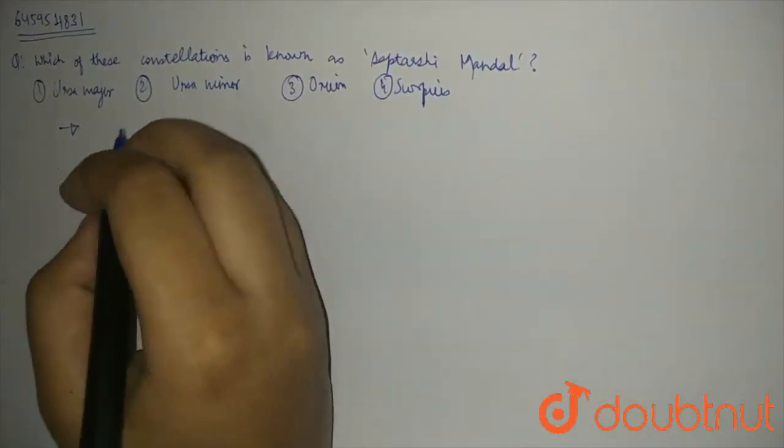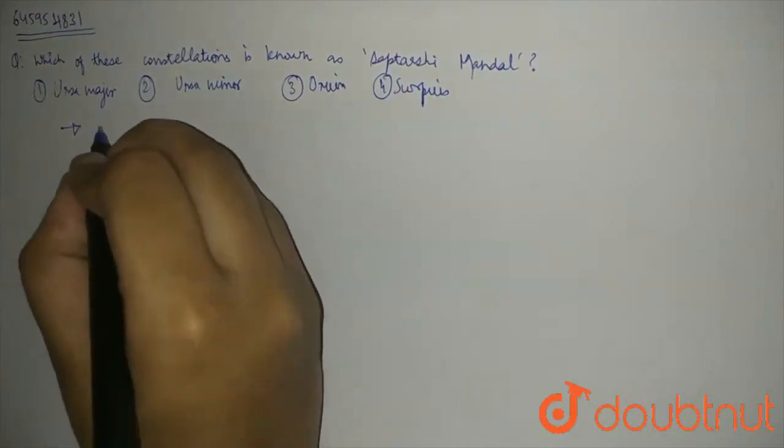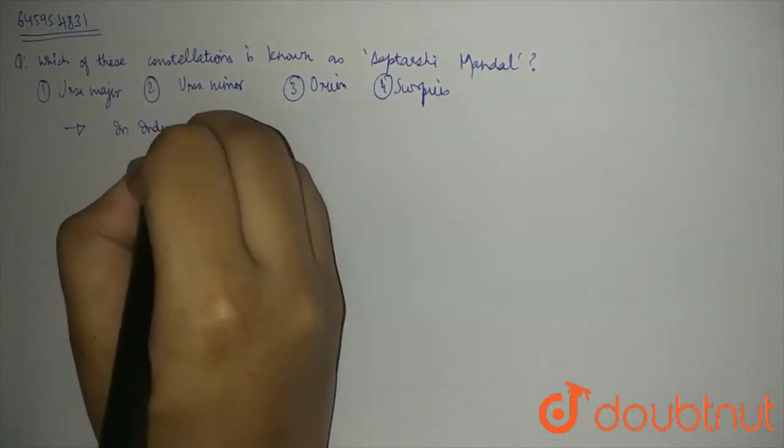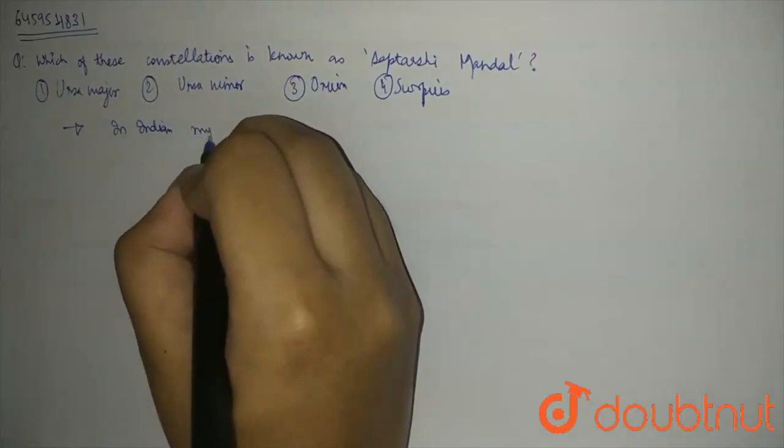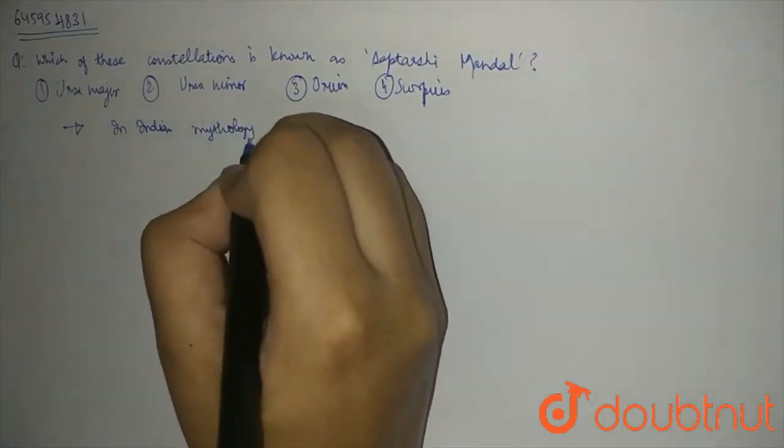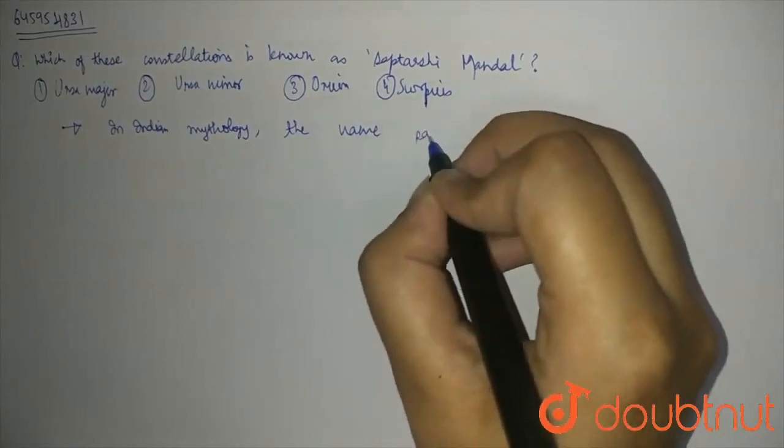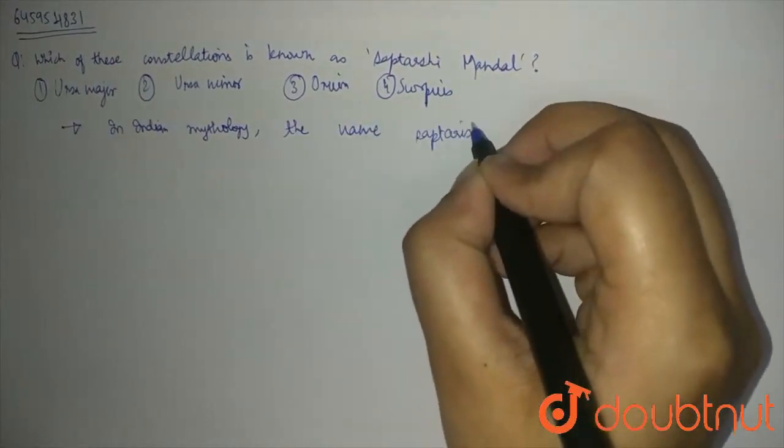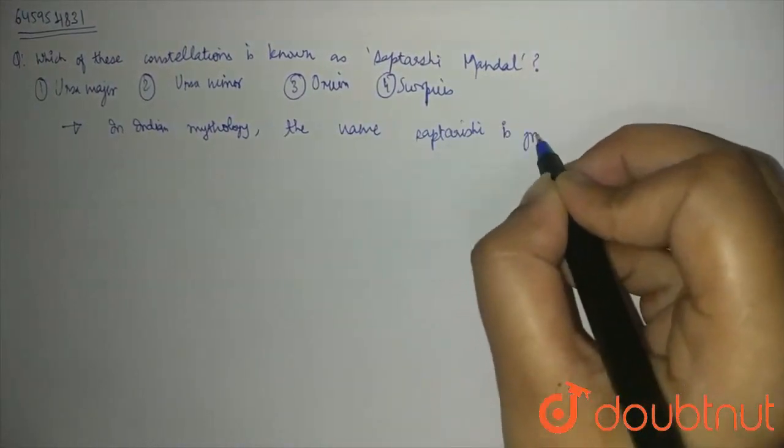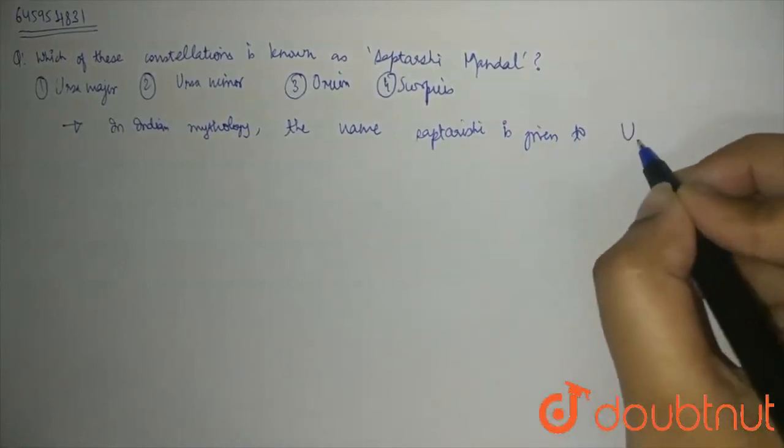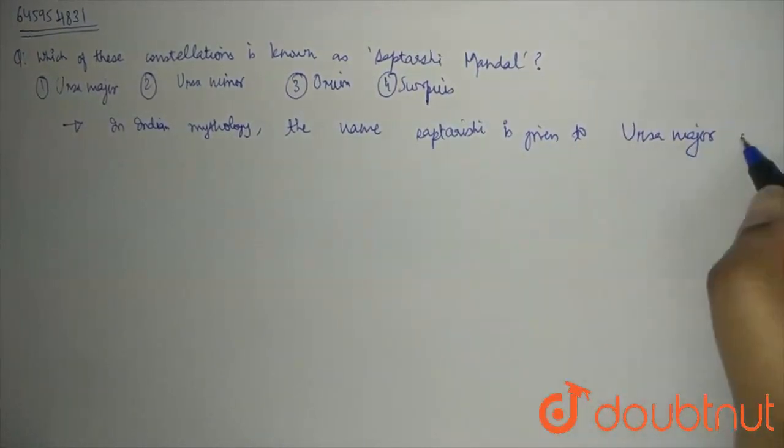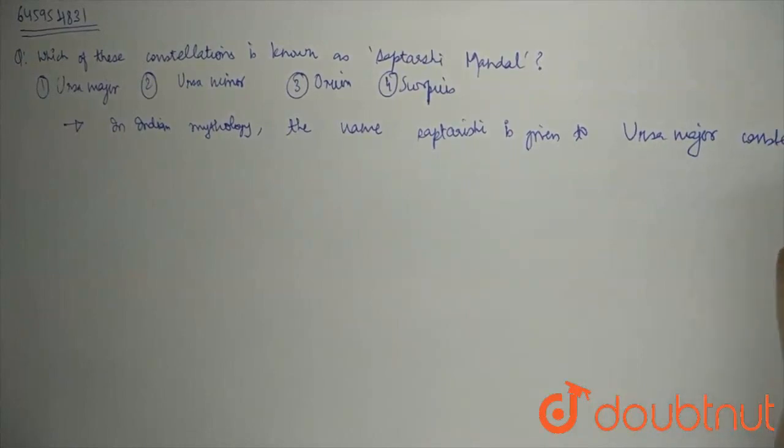So, in Indian mythology, the name Saptarishi is given to Ursa Major constellation. So, I will just write constellation, okay?